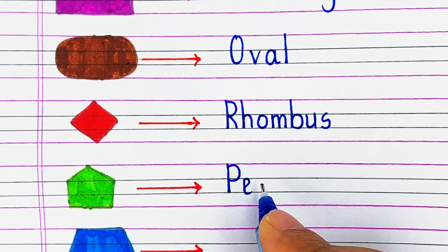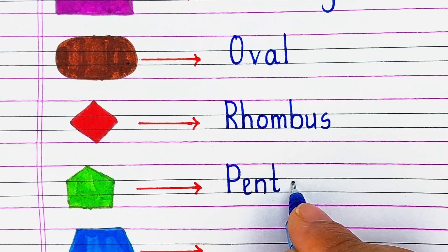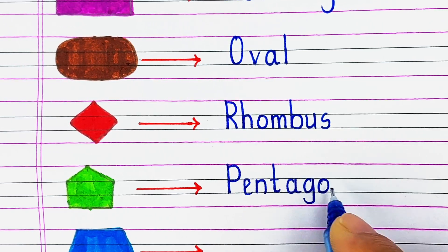Next is a shape with 5 sides. It is called a pentagon.